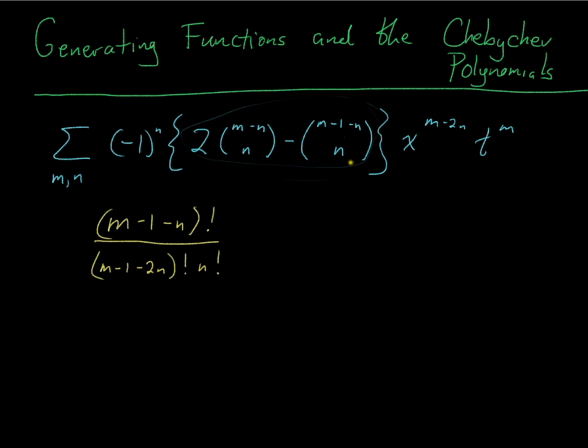At least where it's non-zero. I don't really care about where it is zero. So, well, if I want to write in terms of that, that guy is (m minus n) factorial over (m minus 2n) factorial n factorial.